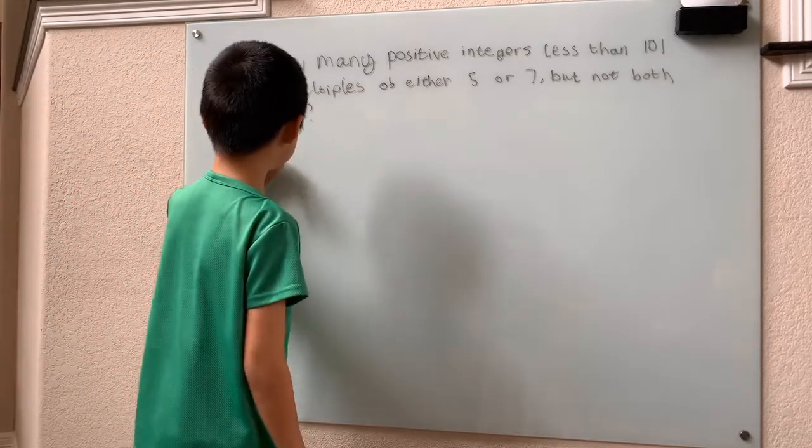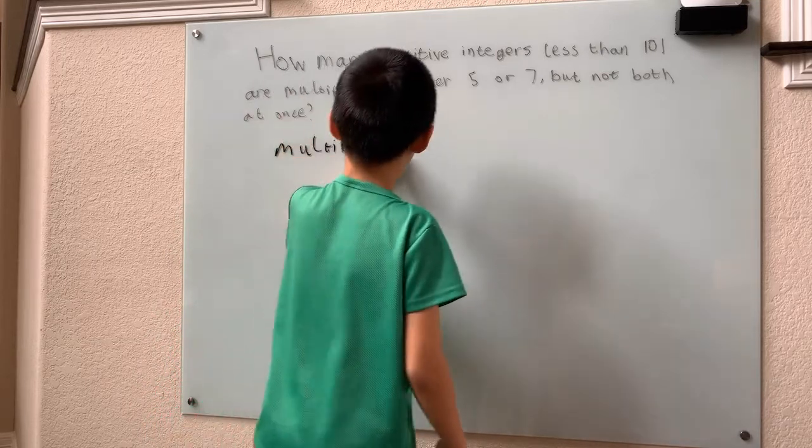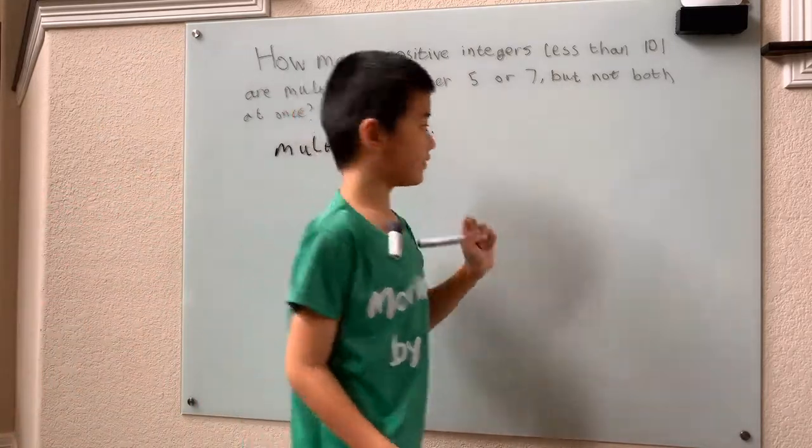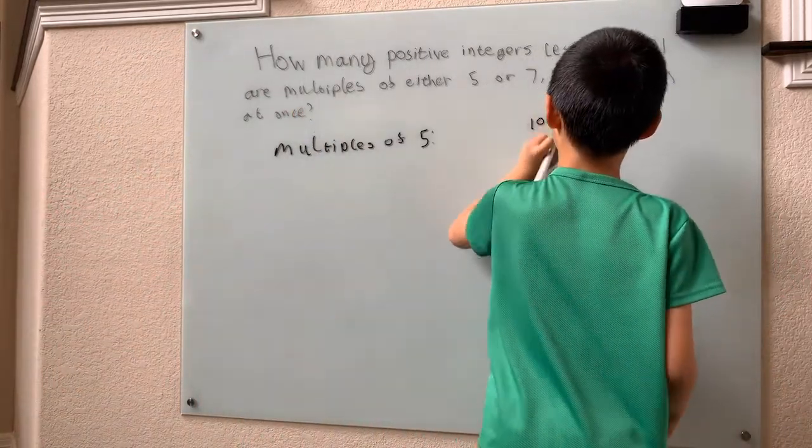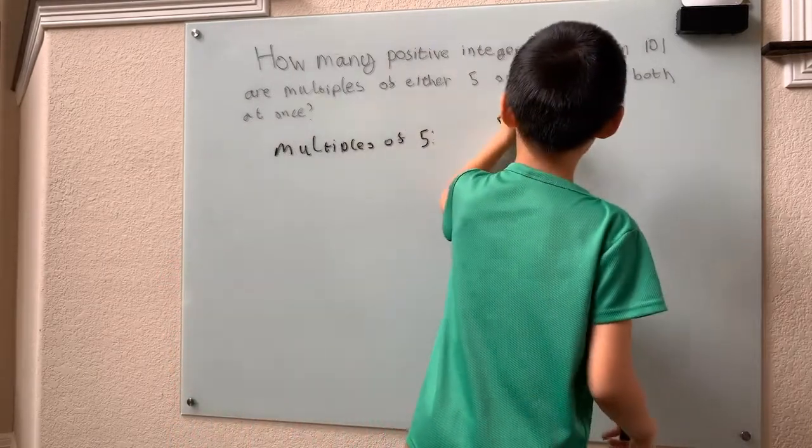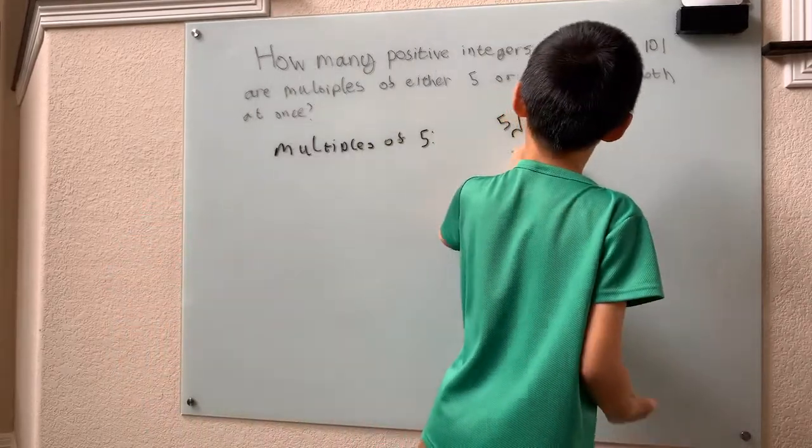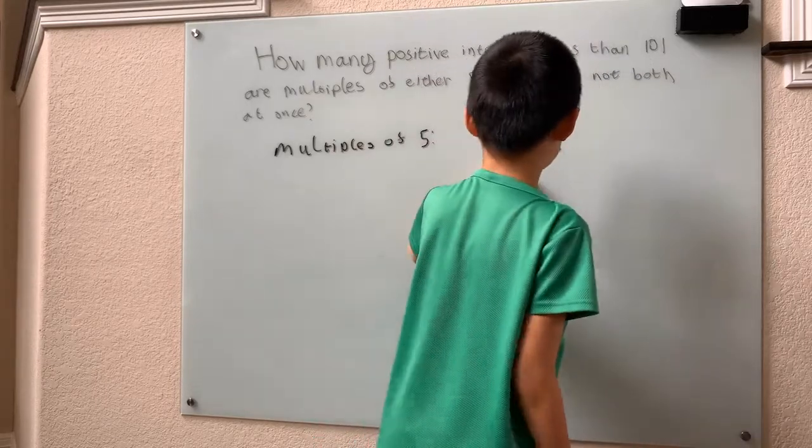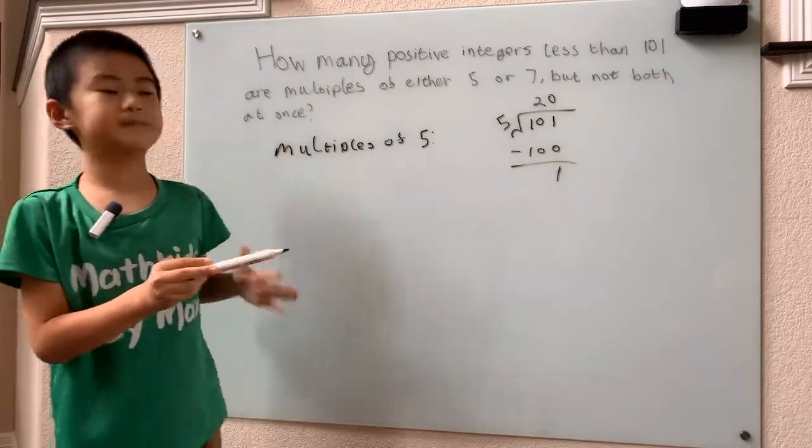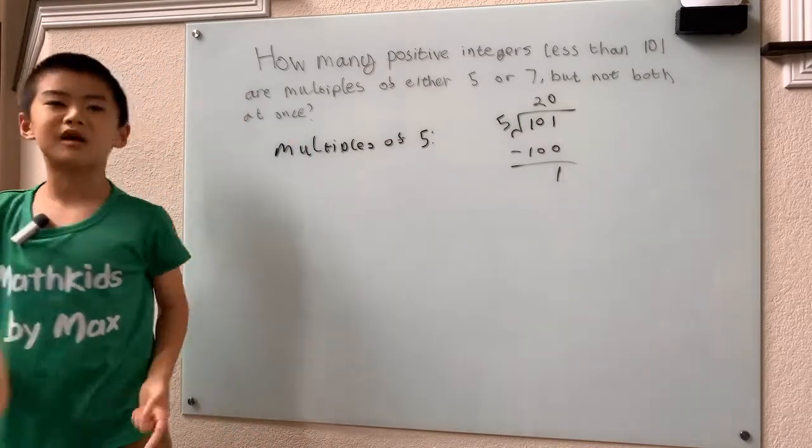The total multiples of 5. Well, we can count that by just dividing 101 by 5. And we can clearly see that 5 goes into 101 20 times. Multiply that by 20, we have remainder 1. So all this basically means that we can fit in 20 of these multiples of 5, or 20 of these blocks of 5 in 101.